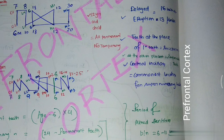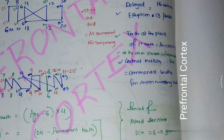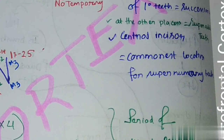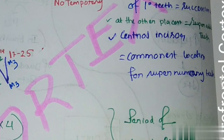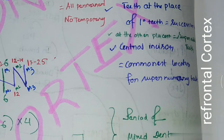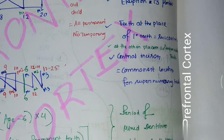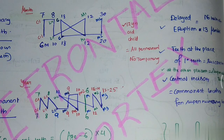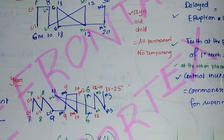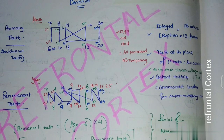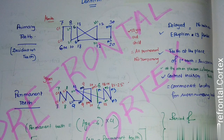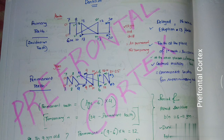One important fact: the central incisor is the most common location for supernumerary teeth. To summarize, remember the two mnemonics — NXI for deciduous teeth and MAIN for permanent teeth — and use these to recall the full dentition age groups.